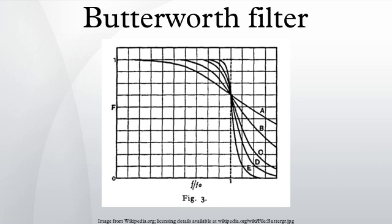Maximal flatness: assuming, the derivative of the gain with respect to frequency can be shown to be, which is monotonically decreasing for all since the gain G is always positive. The gain function of the Butterworth filter therefore has no ripple.